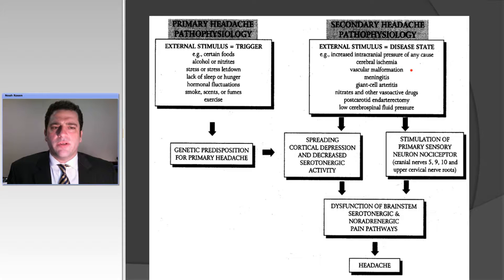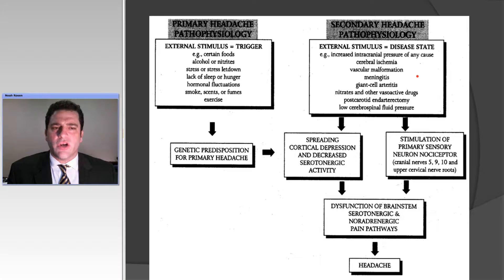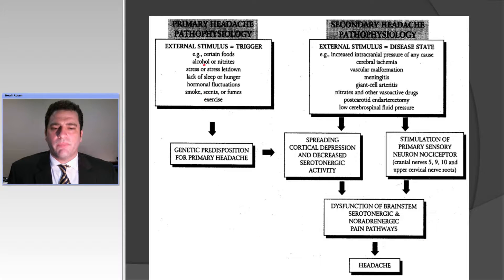Similarly, with secondary headaches — headaches caused, for example, by increased intracranial pressure, cerebral ischemia seen in stroke, vascular malformations, meningitis or infections of the covering of the brain, encephalitis, or autoimmune conditions such as giant cell arteritis — we can also see spreading cortical depression, but also stimulation of primary sensory neuronociception, that is certain cranial nerves which pass on that information, and then ultimately act through the trigeminovascular system leading to pain.